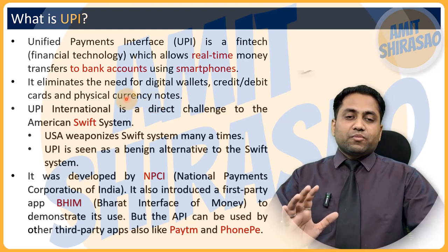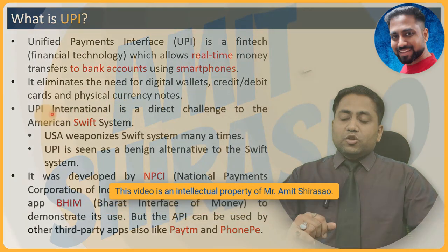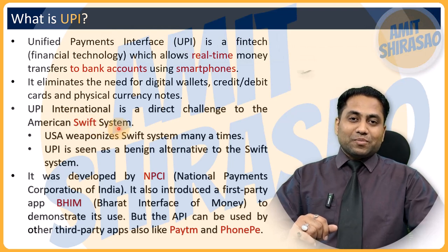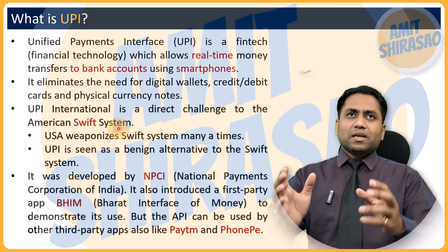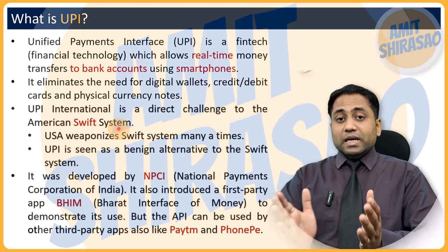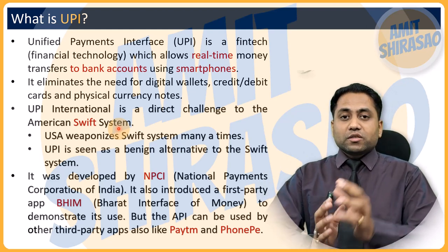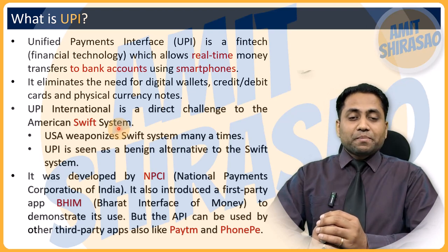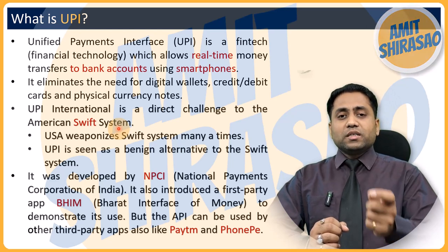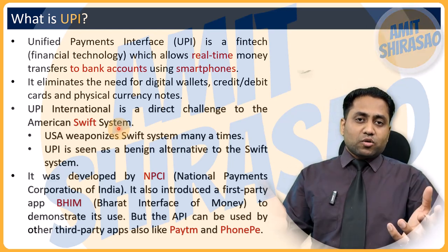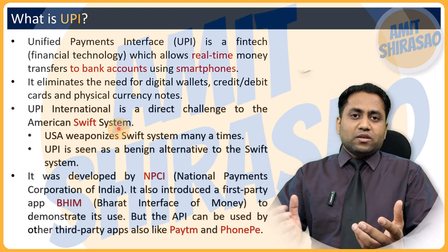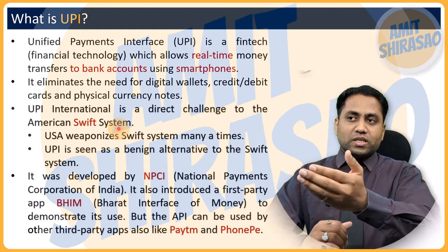UPI International is a direct threat to the American SWIFT system. SWIFT is an American system through which US dollars can be transferred from one country to another — for example, if India has to buy oil from Saudi Arabia, we transfer US dollars to Saudi Arabia using the SWIFT system. It is an interbank transfer system operating across countries, not within a single country.